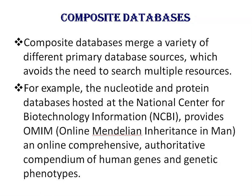Composite databases merge a variety of different primary database sources, which avoids the need to search multiple resources. Different composite databases use different combinations of primary databases and different criteria in their search algorithms. For example, the nucleotide and protein databases hosted at the National Center for Biotechnology Information, NCBI, provide OMIM — Online Mendelian Inheritance in Man — an online comprehensive authoritative compendium of human genes and genetic phenotypes.